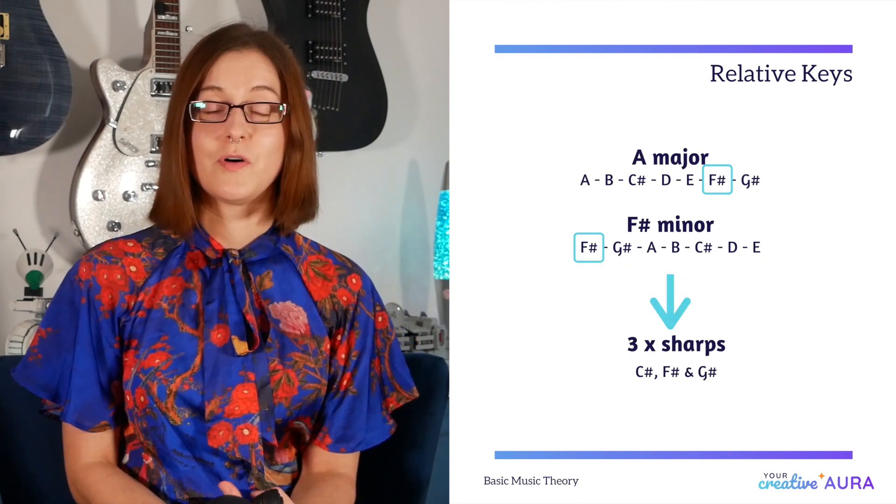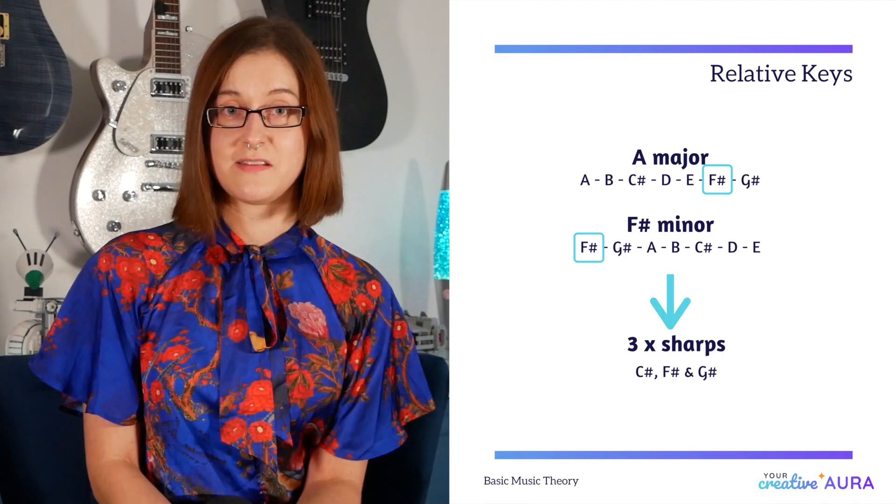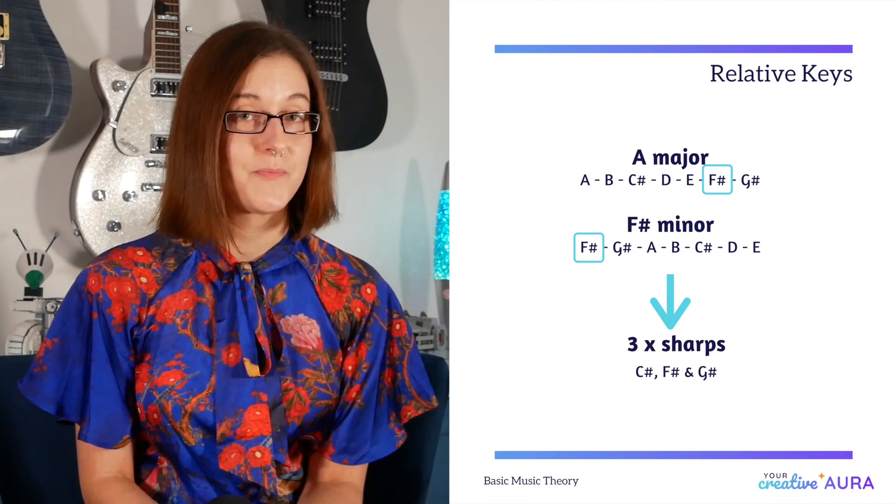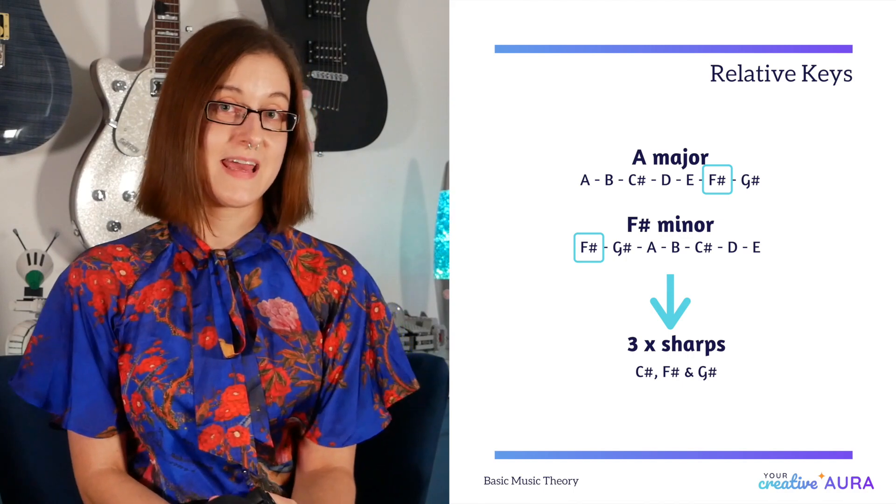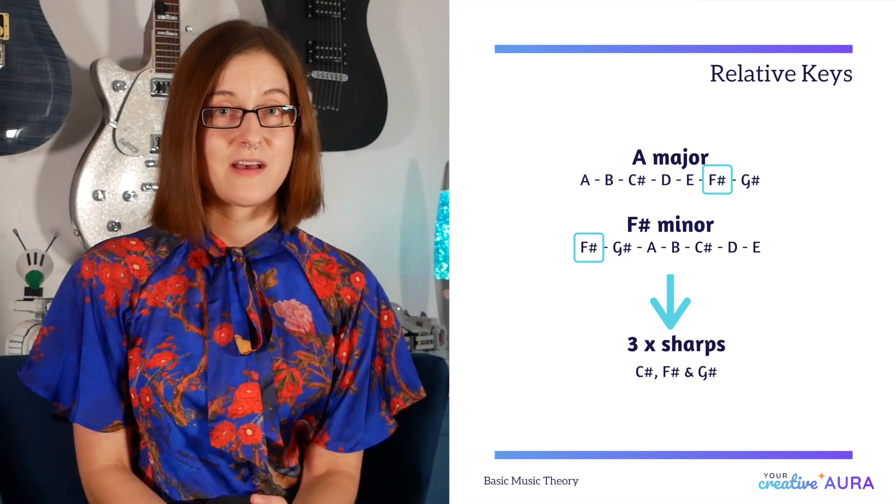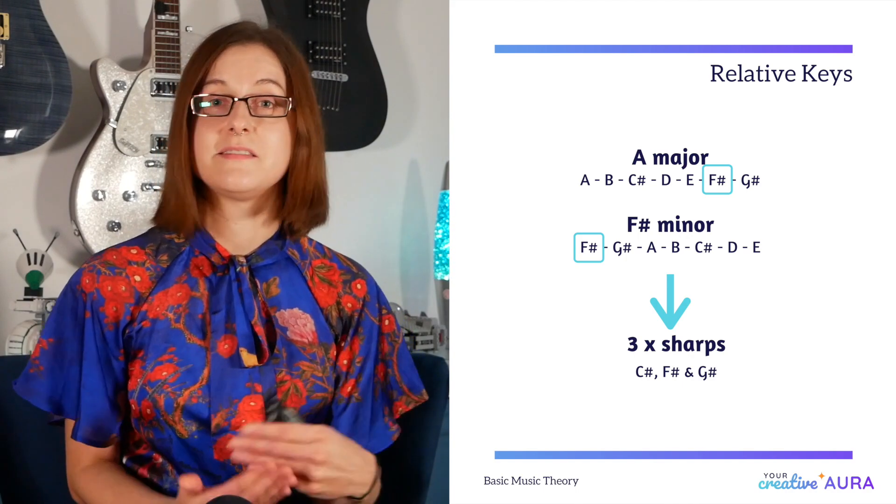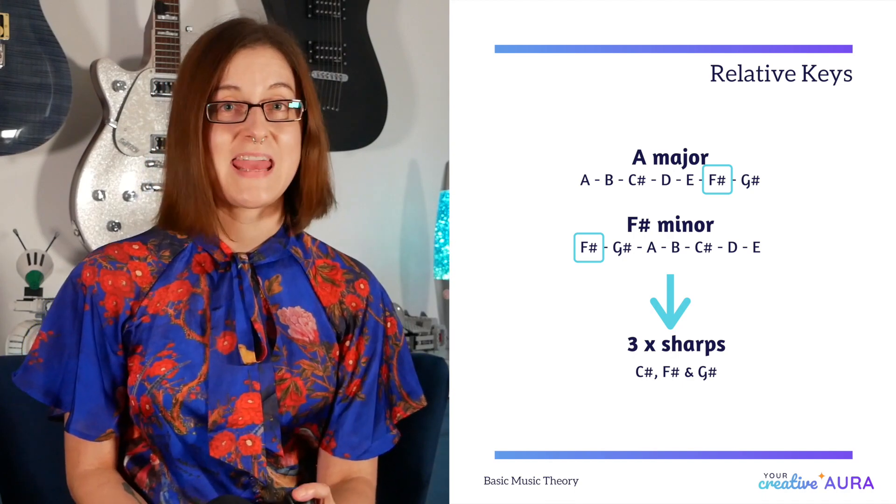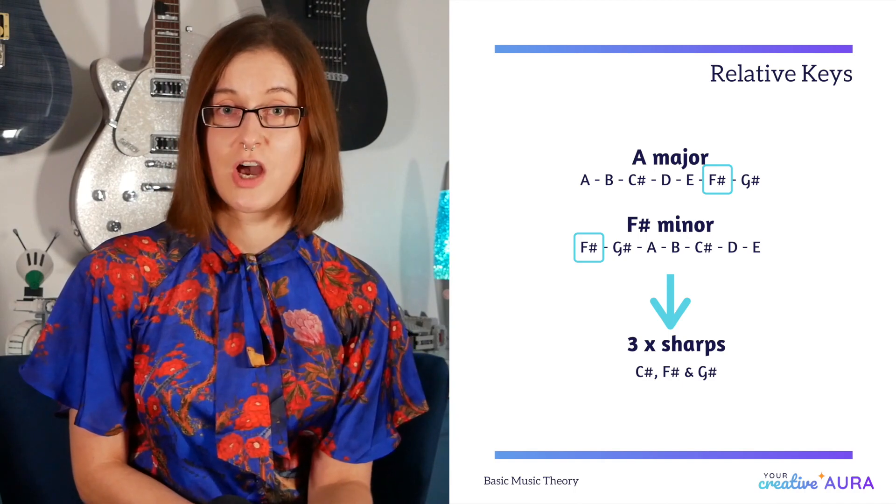And you can find the beginning of a minor scale by starting at the sixth note in a major scale. So here we have an example with A major. The sixth note in the scale is an F sharp. Therefore F sharp is the relative minor key to A major. Both scales, A major and F sharp minor, contain the same notes: A, B, C sharp, D, E, F sharp and G sharp.